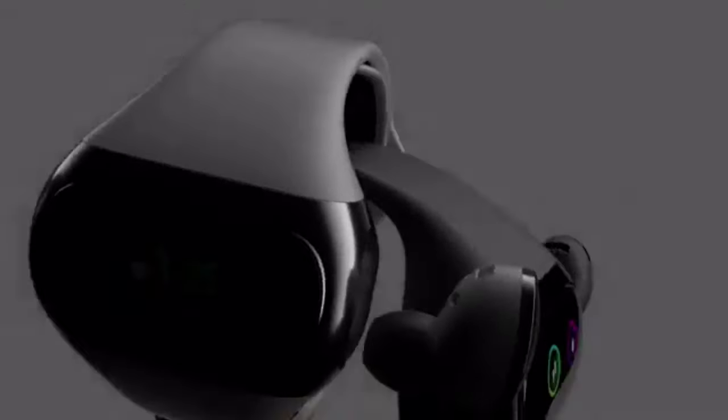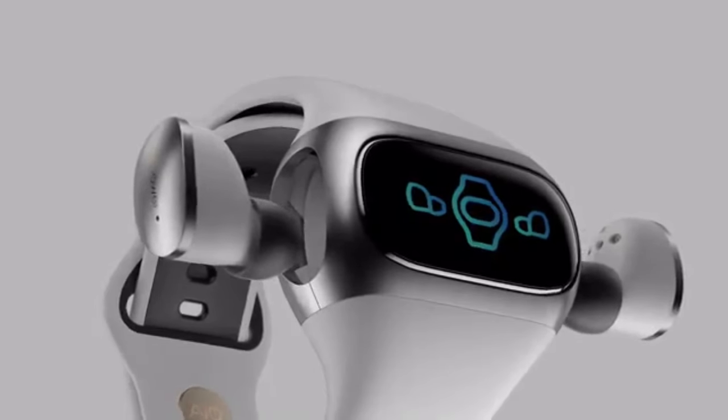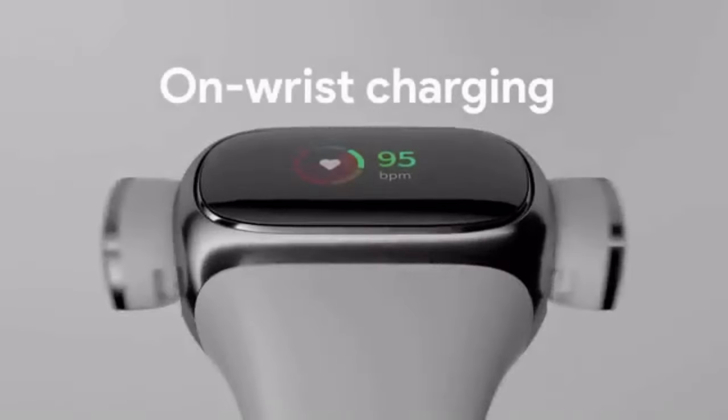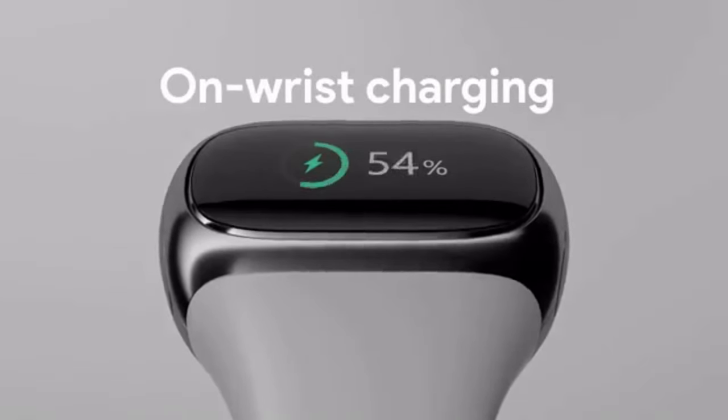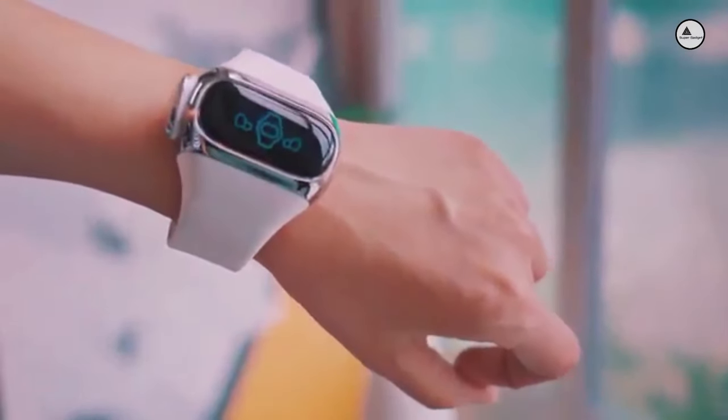Introducing Wearbuds, the world's first on-wrist charging true wireless earbuds. The innovative design allows you to charge your earbuds on the go without a case. They are securely stored on your wrist, ready for whenever you need them.